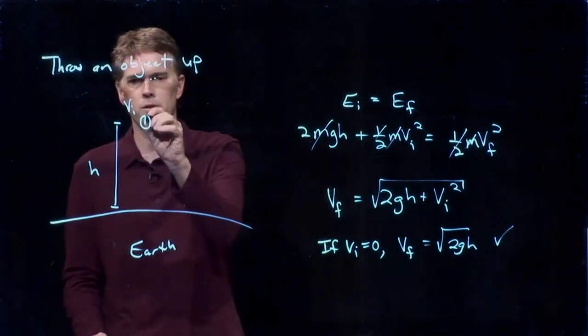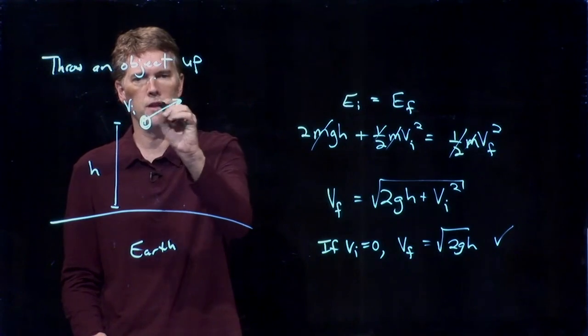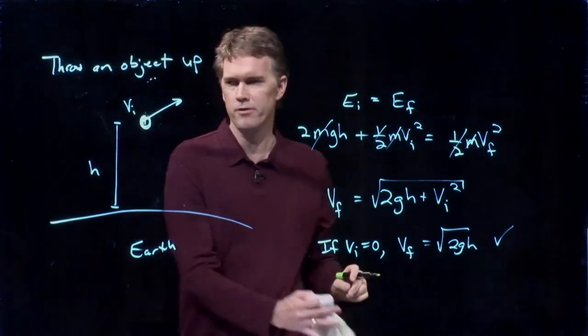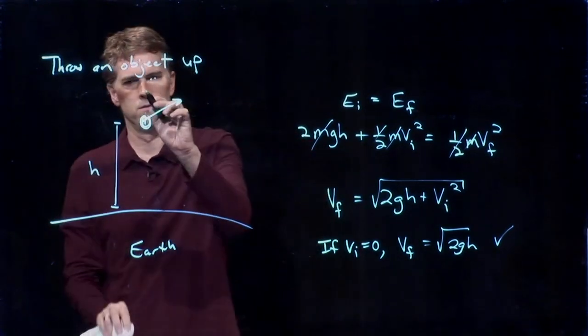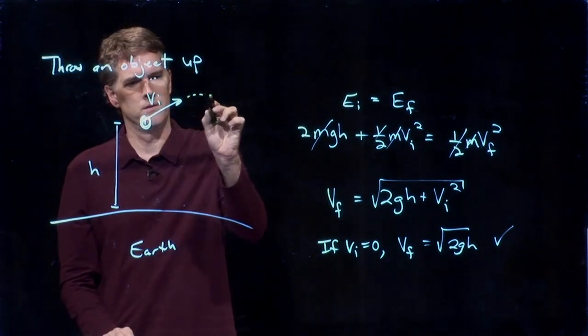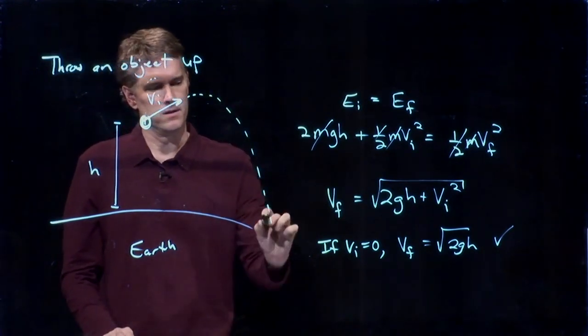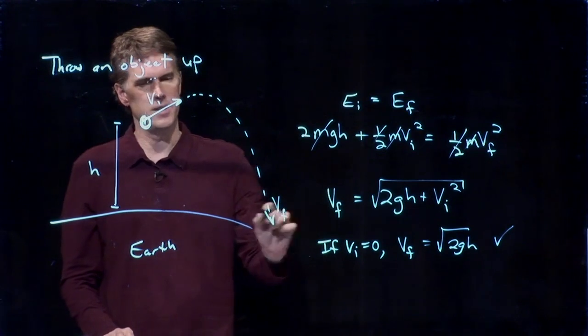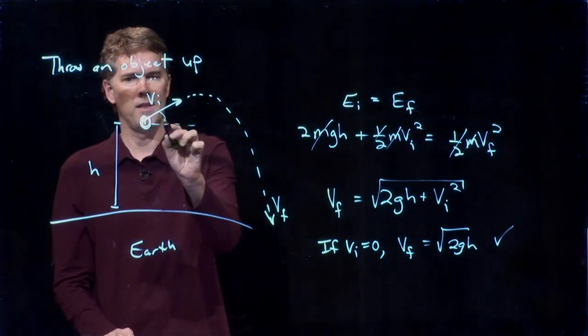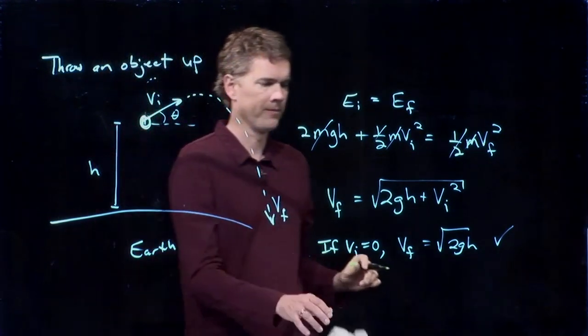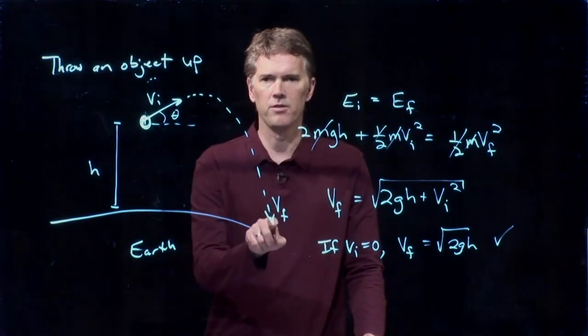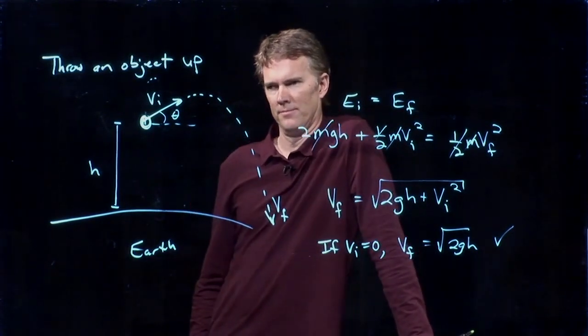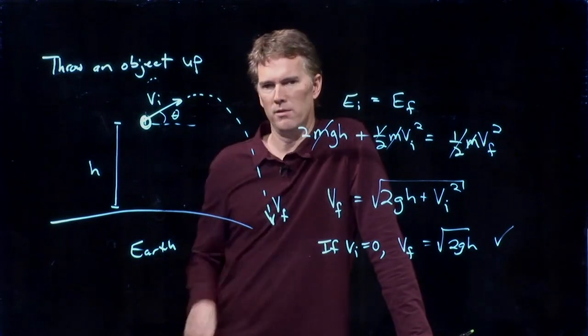If we threw this object out at this angle with speed Vi, comes down here, hits the ground at Vf, and let's say that is angle theta, what is this Vf? I'm asking you guys.